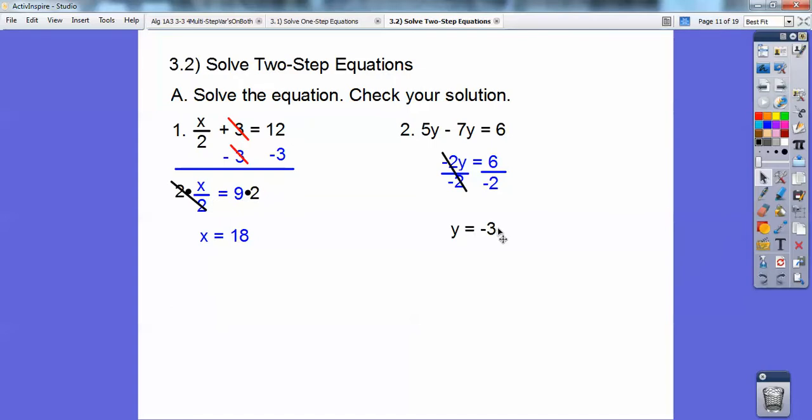Now let's plug this back in. Mentally plug this back in. 5 times negative 3 is negative 15. 7 times negative 3 is negative 21, but there's a minus in front of it, so it becomes minus a negative 21, which becomes plus 21. So negative 15 plus 21, yep, that equals 6.